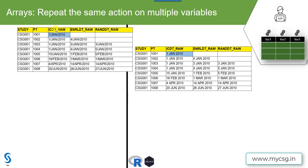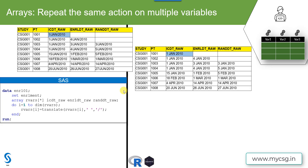We can make use of a function like translate to replace the hyphen with a space, but we need to repeat the same action on three different variables. In SAS, we make use of arrays. The basic syntax of arrays is to define a short name for the variables we want to act upon. Here I want to perform the same action on three variables: ICDT_raw, ENRLDT_raw, and RANDDT_raw. I am temporarily giving them a short name called RVARS, and within square brackets specifying star, which counts the number of variables. Then we use a do loop to repeat the action on these three variables.